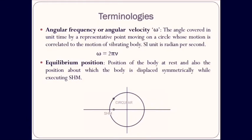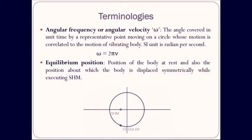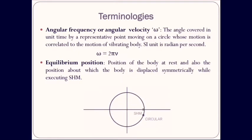The next terminology is angular frequency or angular velocity, given by omega. This is the angle covered in unit time by a representative point moving on a circle whose motion is correlated to the motion of the vibrating body. The SI unit is radian per second. The relation between angular frequency and natural frequency nu is given by omega equals 2 pi nu.